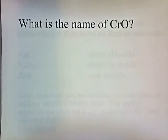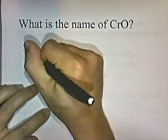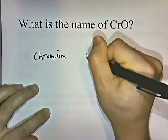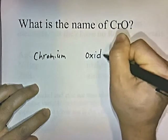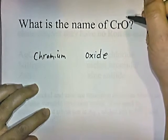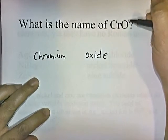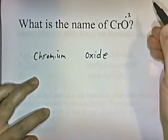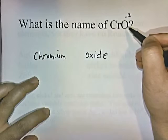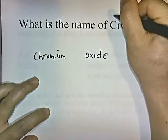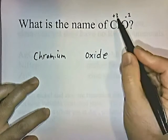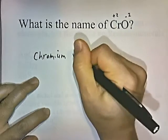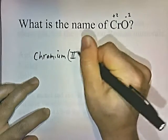What's the name of CrO? Same procedure — oxygen is in group 6 and has a negative two oxidation number. To balance and make the total charge zero, the chromium must be positive two. Positive two and negative two add up to zero, so CrO is called chromium 2 oxide.